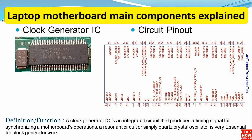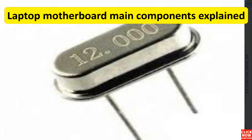The next component is the clock generator IC. It is one of the most important ICs in every computer motherboard, because without it the motherboard cannot work properly — this IC synchronizes all components in the motherboard. Always near the clock generator you will find a crystal oscillator, and here is the pin configuration of the clock generator. As a definition, the clock generator IC is an integrated circuit that produces a timing signal for synchronizing motherboard operations. A quartz crystal oscillator is very essential for any clock generator.